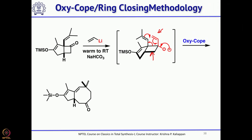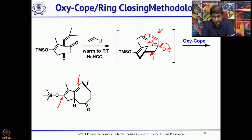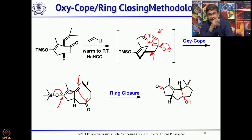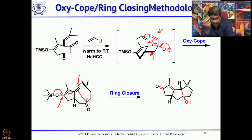In that process you generate an enol TMS ether and another double bond in conjugation with it — this can be called a vinylogous silyl enol ether. This lone pair on the silicon bond then attacks the carbonyl intramolecularly, giving the corresponding triquinane. The 8-membered ring cyclizes intramolecularly to give a linear triquinane.